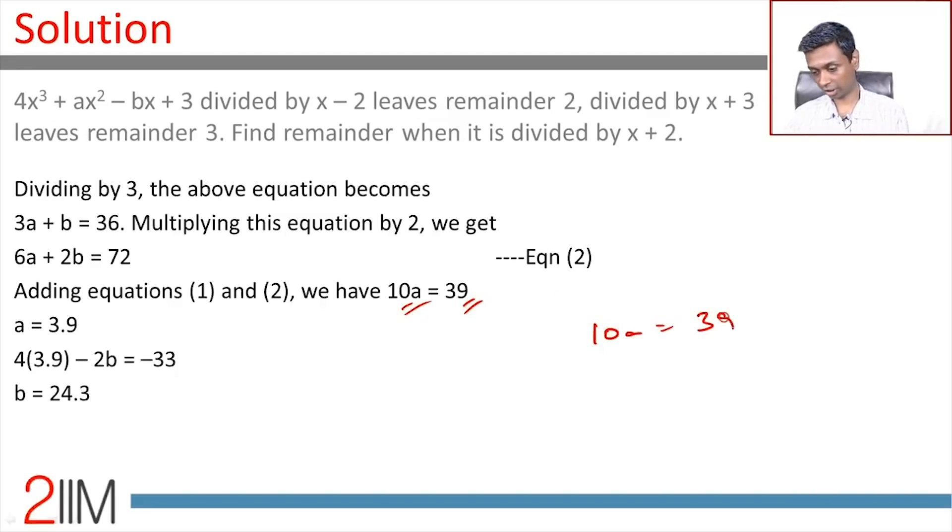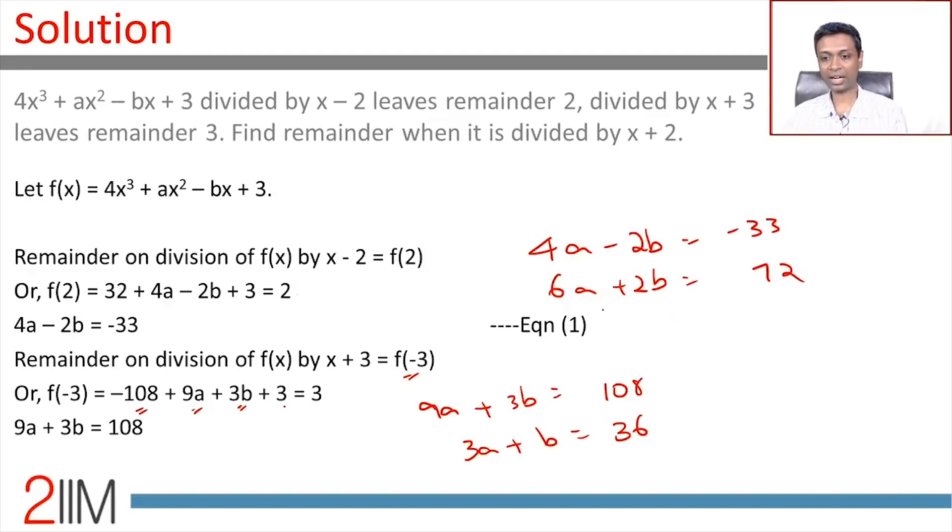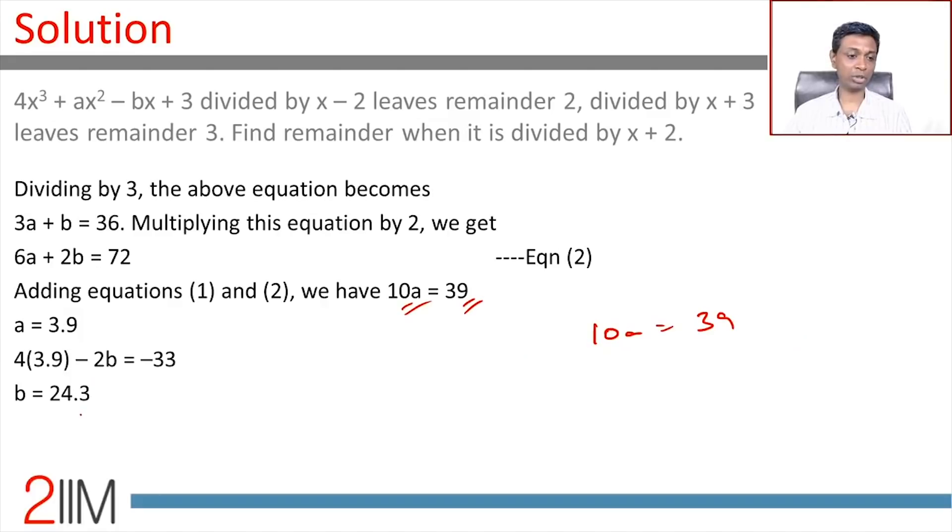I'm just going to go over this again. Add these two, 10a equals 39 or a is 3.9. Plug a equals 3.9, we get b is 24.3.